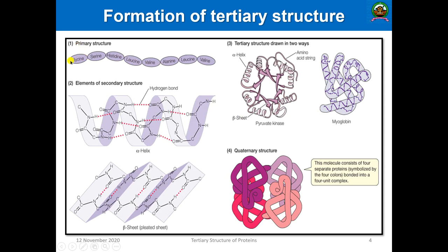To recap: primary structure is the linear sequence of amino acids connected by peptide linkages. These are further stabilized in a helical or pleated sheet form by hydrogen bonds, giving alpha helix and beta sheet — the secondary structures we discussed in the previous class. All these secondary structures, when completely folded, give the tertiary structure. For example, pyruvate kinase, an important enzyme involved in glycolysis, comprises many such tertiary structural elements.